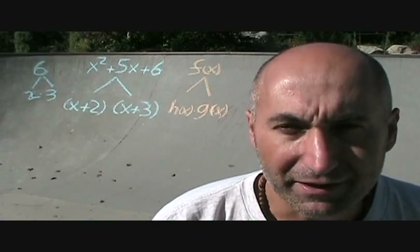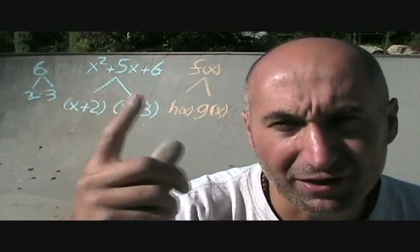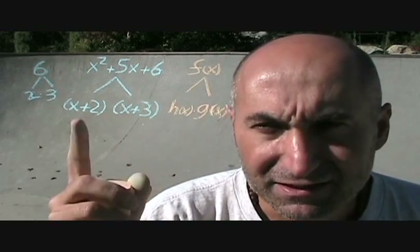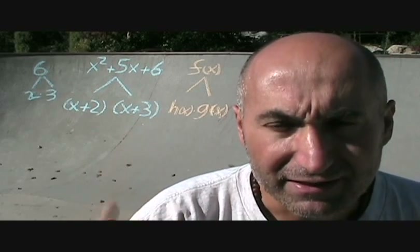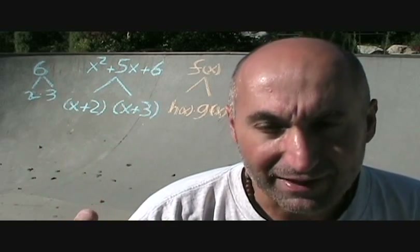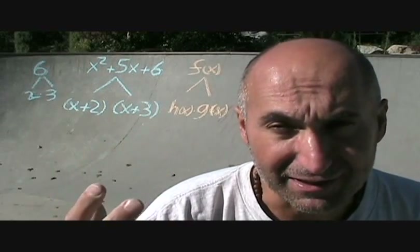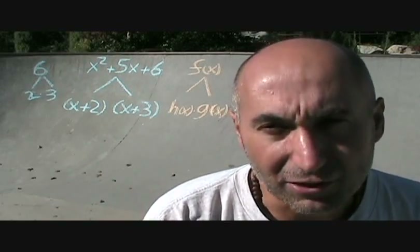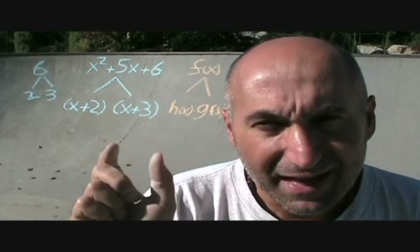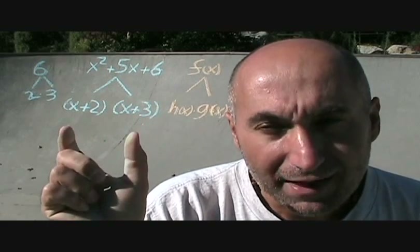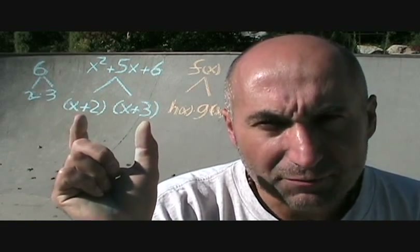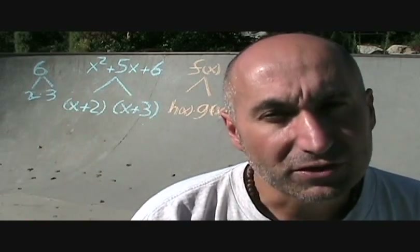We can call this polynomial f of x, so f of x equals h of x times g of x, where h of x is x plus 2 and g of x is x plus 3. Graphically, this polynomial is a parabola. So we're taking our parabola and breaking it down into two functions that are not parabolas — two linear functions, two lines — that multiply together to give the parabola.